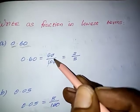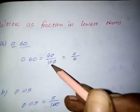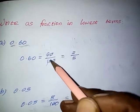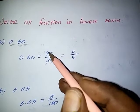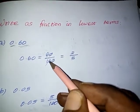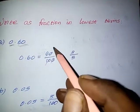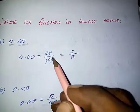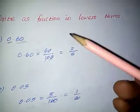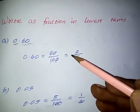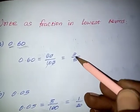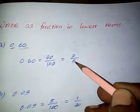Now, cancel the zeros: 60 by 100 becomes 6 and 10. Now, 6 and 10 can be divided using the 2 times table. 3 twos are 6 and 5 twos are 10. So the required fraction of the given decimal is 3 by 5.